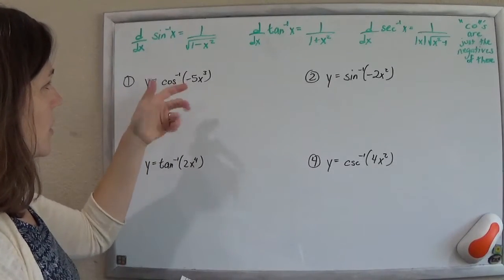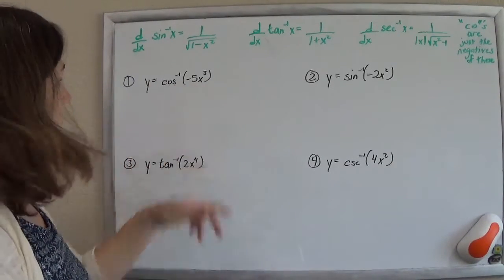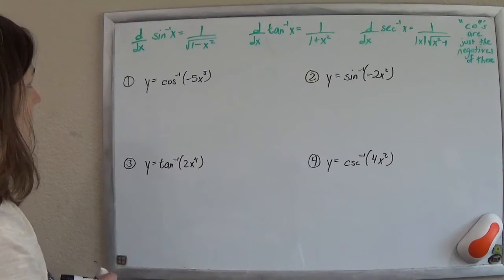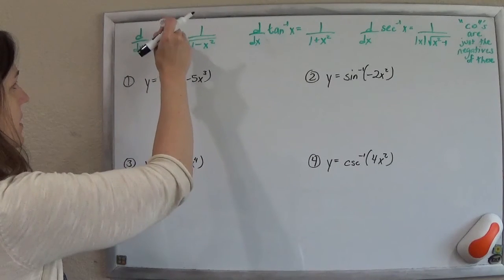They're going to combine it with all our product rule and chain rule and quotient rule and stuff. And the trickiest one is always the chain rule, how does that look like?